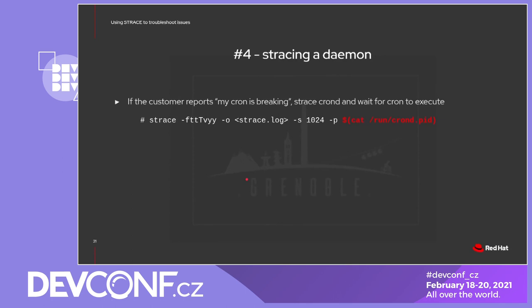In this fourth example, the customer was complaining that executing a script in the terminal was working fine, but not through cron. The easy way to debug this is to strace the cron daemon — just attach to the existing crond which has its PID recorded in /run/crond.pid. Then wait for the script to execute through cron, stop strace, filter on the PID of the script that executed, and dig into the strace. The root cause was an invalid SELinux context on a file that the script was attempting to read, resulting in permission denied. This happened because when executing the script as the user, the SELinux context was unconfined, whereas under cron, the SELinux context was limited.